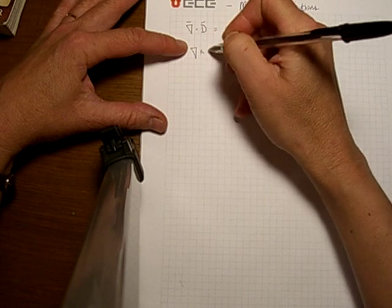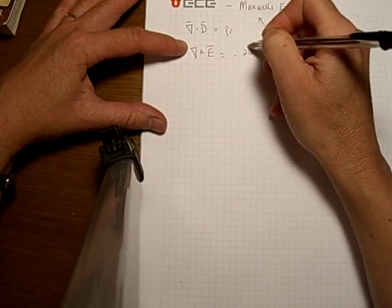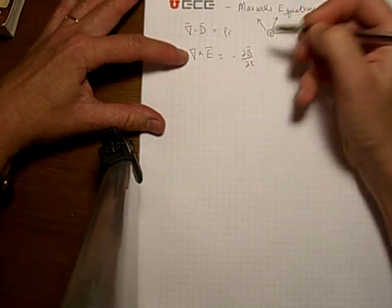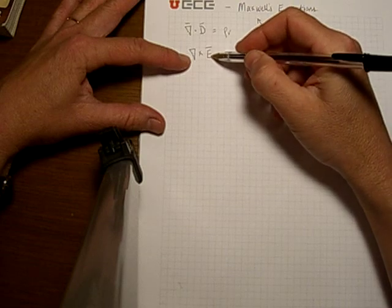The second Maxwell's equation is that the curl of the electric field is equal to the time derivative of the magnetic field. This is Faraday's Law equation. This is saying that a time varying magnetic field produces an electric field.